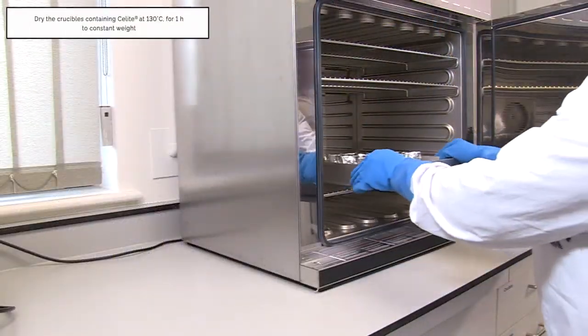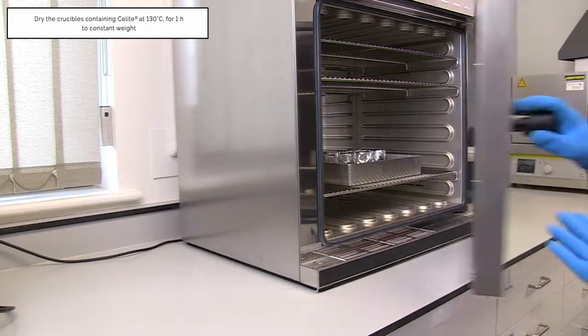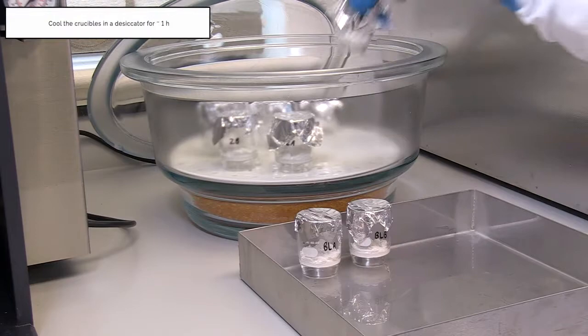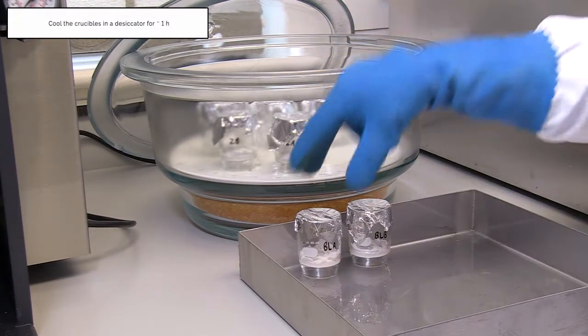Dry the crucible containing celite at 130 degrees Celsius for one hour to constant weight. Cool crucibles in a desiccator for approximately one hour.